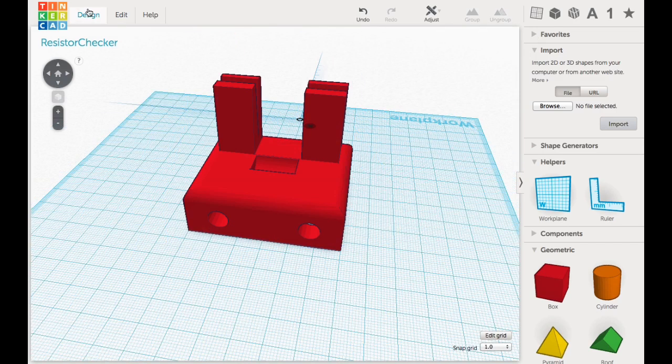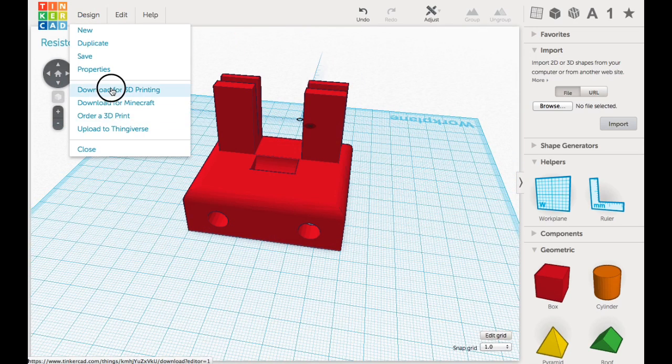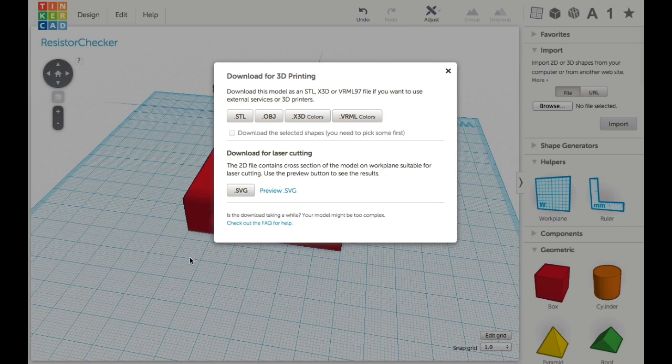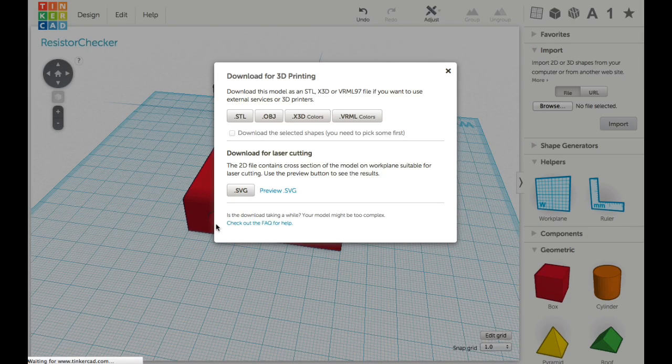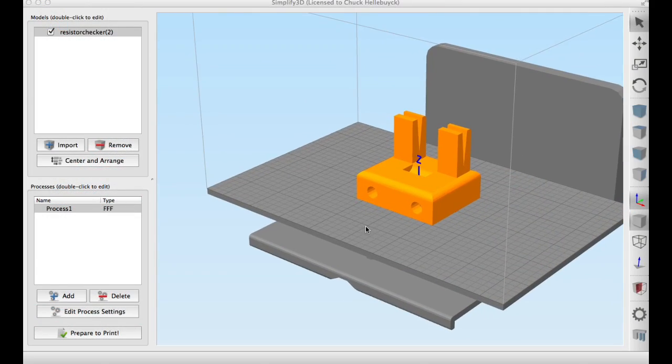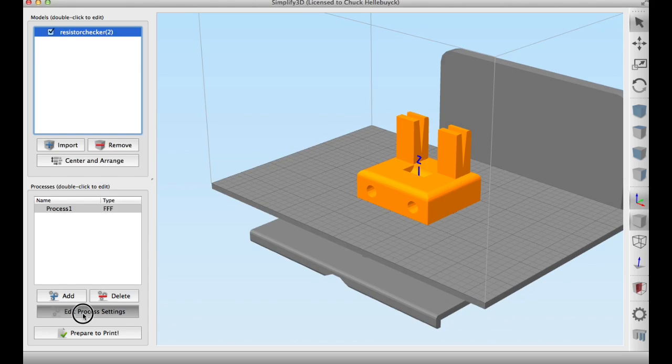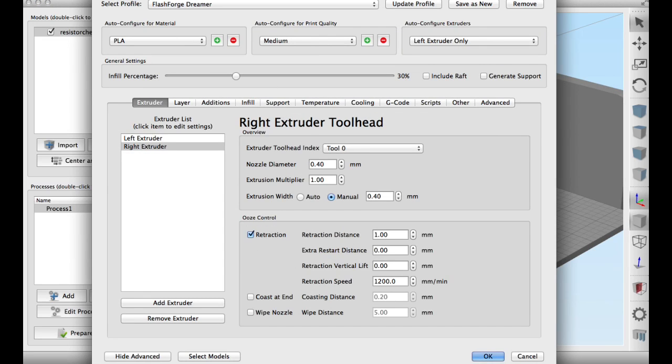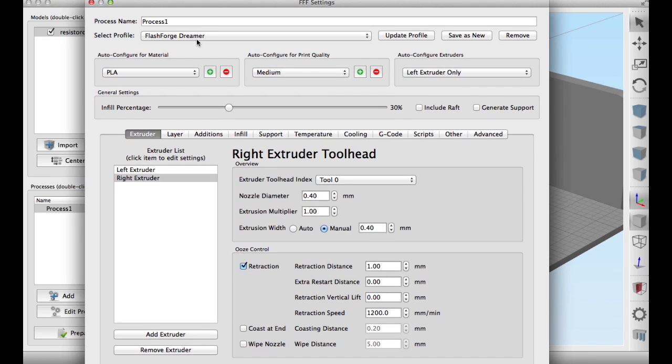So the next step was to print this out so I had to download the STL file so I could send it to Simplify3D and slice it. I actually printed this twice. First time I did PLA, the second time I actually used ABS. So I'll show you settings here that I did for PLA. It's very similar. I did a 30% fill.